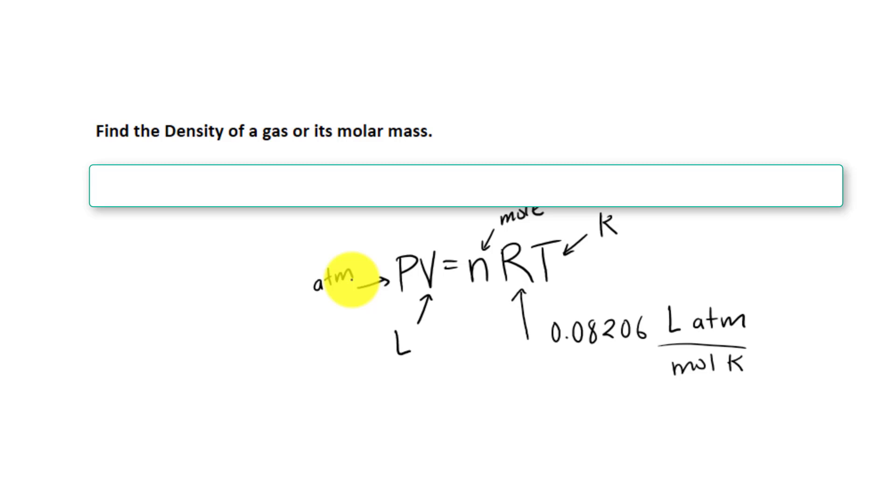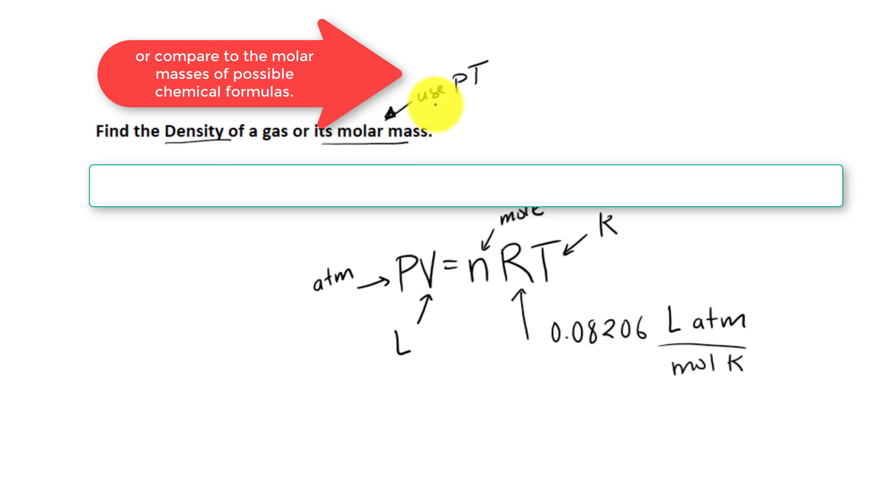Today we are going to look at how the ideal gas law relates to the density of the gas as well as the molar mass of the gas. If we find the molar mass of the sample, we can use the periodic table to determine the identity of the gas. So let's go back and look at this. We have two things: density and molar mass.